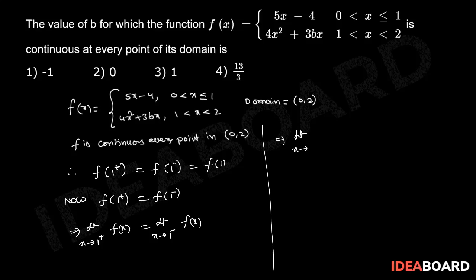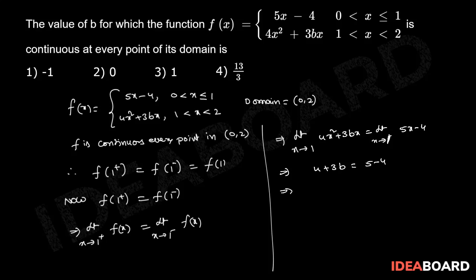That implies: limit as x tends to 1⁺, where x > 1, the function is 4x² + 3bx, equals limit as x tends to 1⁻, where x < 1, the function is 5x - 4. That implies 4 + 3b = 5 - 4, so 3b = -3, therefore b = -1. So the correct answer is the first option.